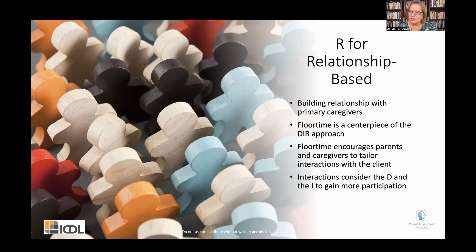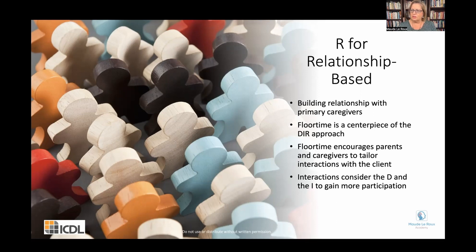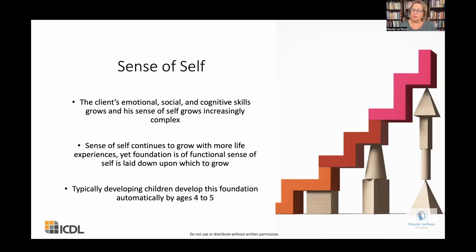Relationship drives everything. And if you're looking at current trauma literature, so much of it is going around the contingency of an attuned relationship, the co-reciprocity that happens between parent and child, between peer and peer, between teacher and child, therapist and child. So we consider the D and the I to gain more participation and intrinsic motivation to want to comply with somebody else's rules, to shift from their own highway to somebody else's highway. It's all about a sense of self — developing yourself into an individuated self.